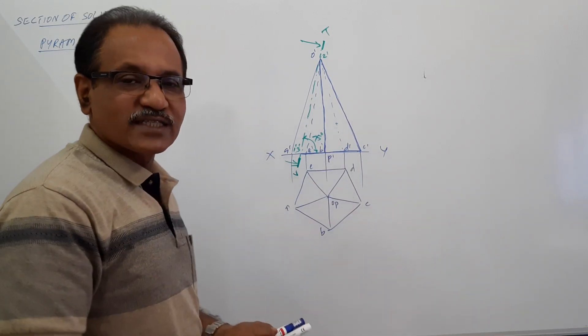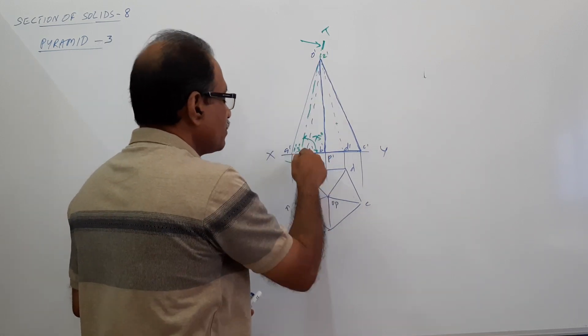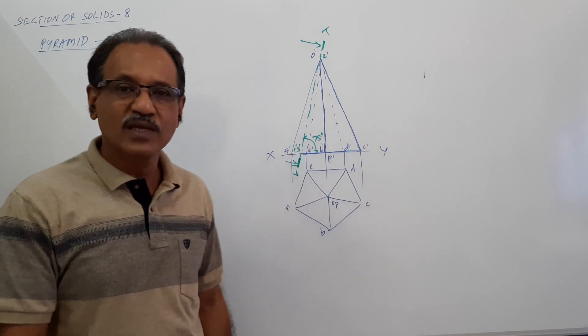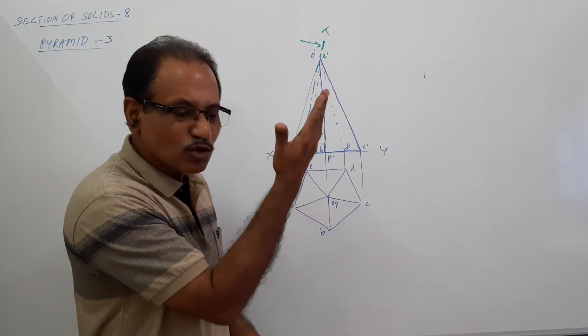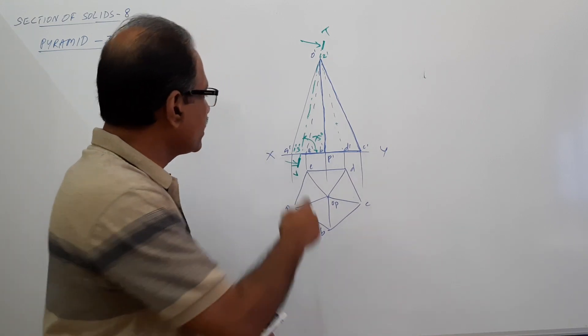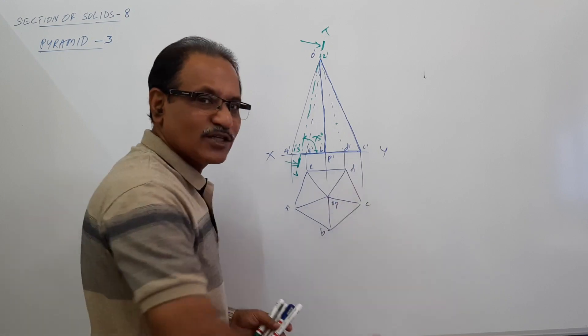Now, where all does it cut? Cut the base at 1 dash, apex at 2 dash, base at 3 dash. It does not cut any of the slanted edges. You visualize it. It is passing through the apex and the base. It does not cut any of the slanted edges. You can see whether this green cutting plane cut any of the slanted edges. No.